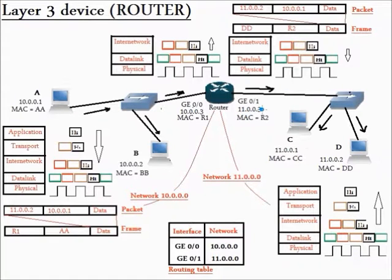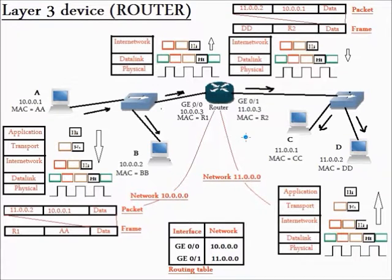We can observe that the data link frame which entered the router over its port Gigabit Ethernet 0/0 is different from the data link frame which exits from its interface Gigabit Ethernet 0/1. Why did the router change the data link frame? This is because the data link layer function is to transmit data between two nodes in the same network, so the source and destination MAC addresses must be in the same network. So the router put the source MAC address equal to its interface MAC address Gigabit Ethernet 0/1, which equals R2, and the destination MAC address equal to DD, which is the MAC address of destination computer D.